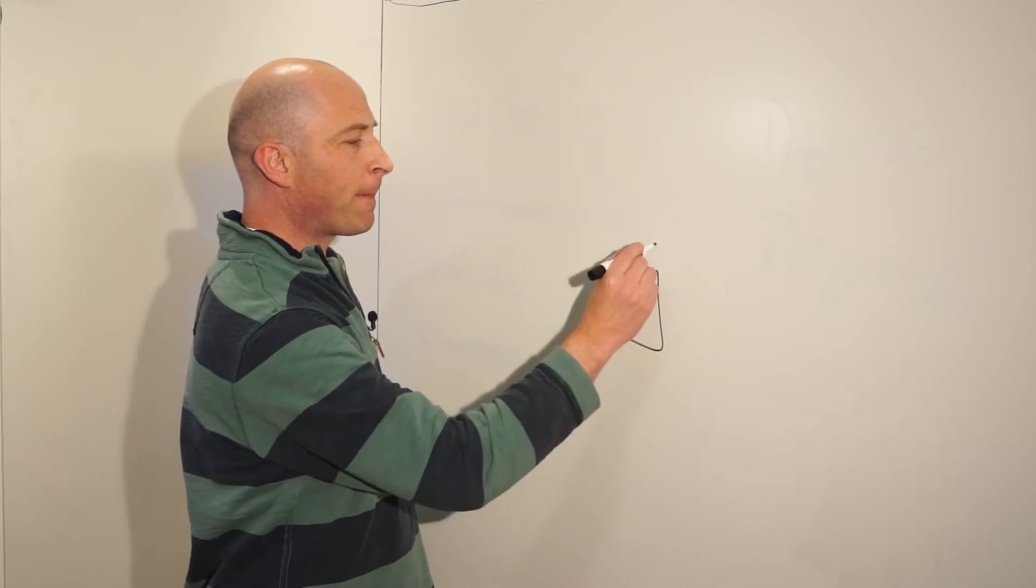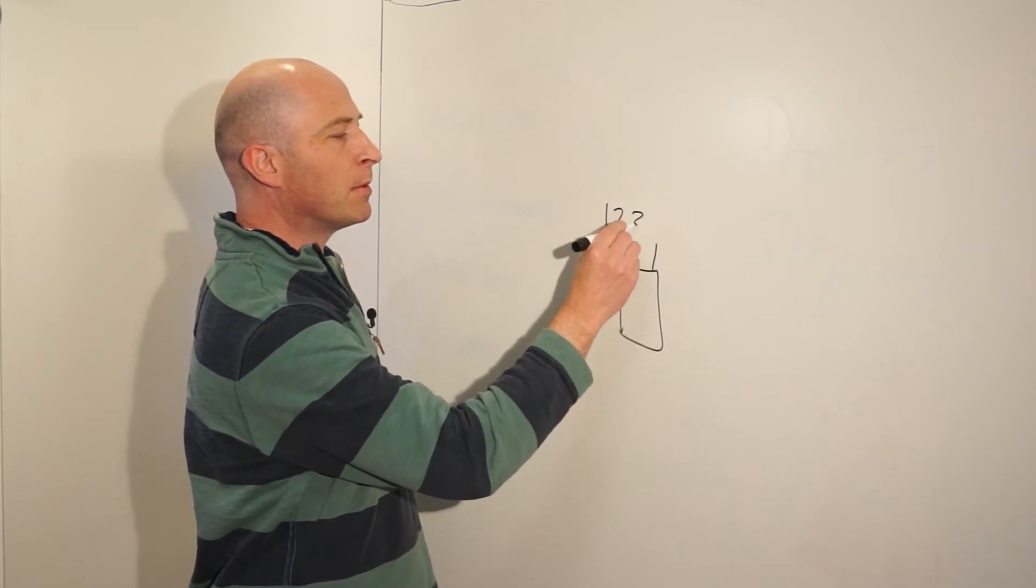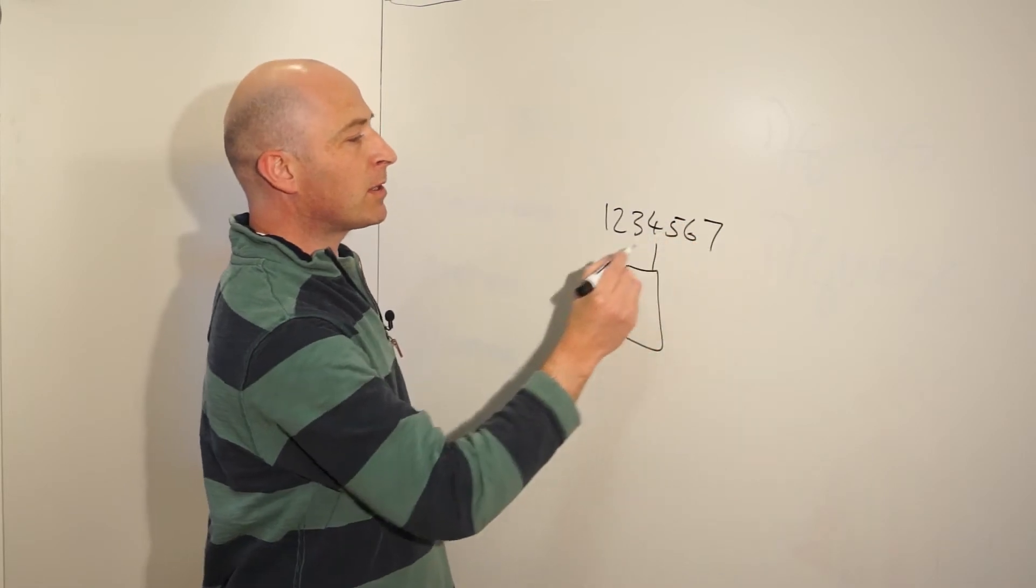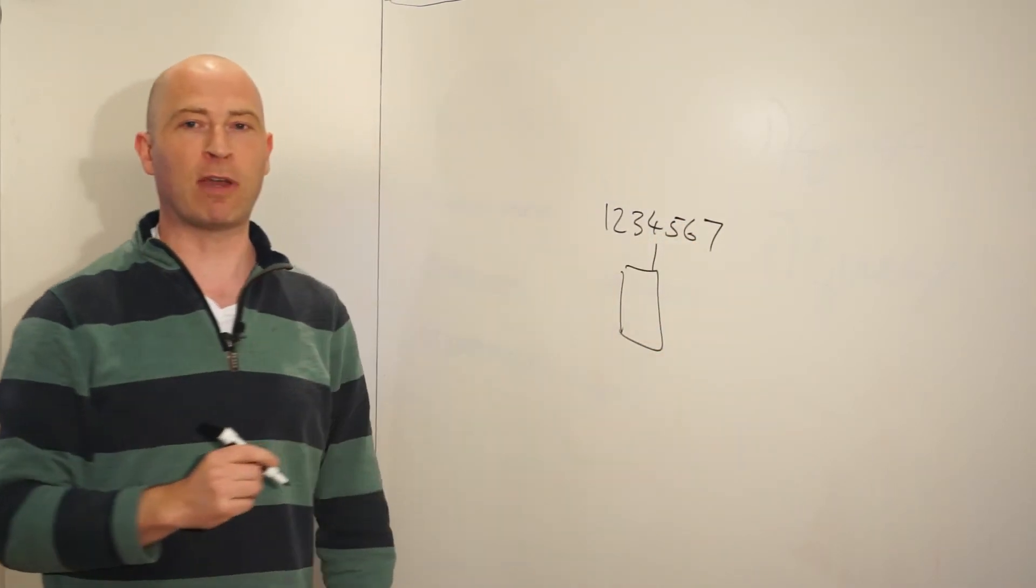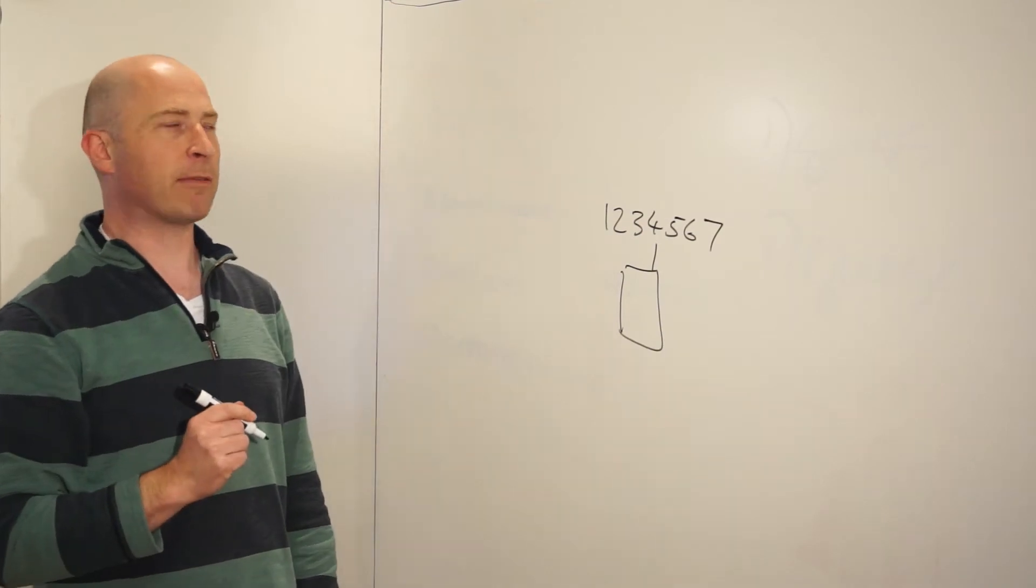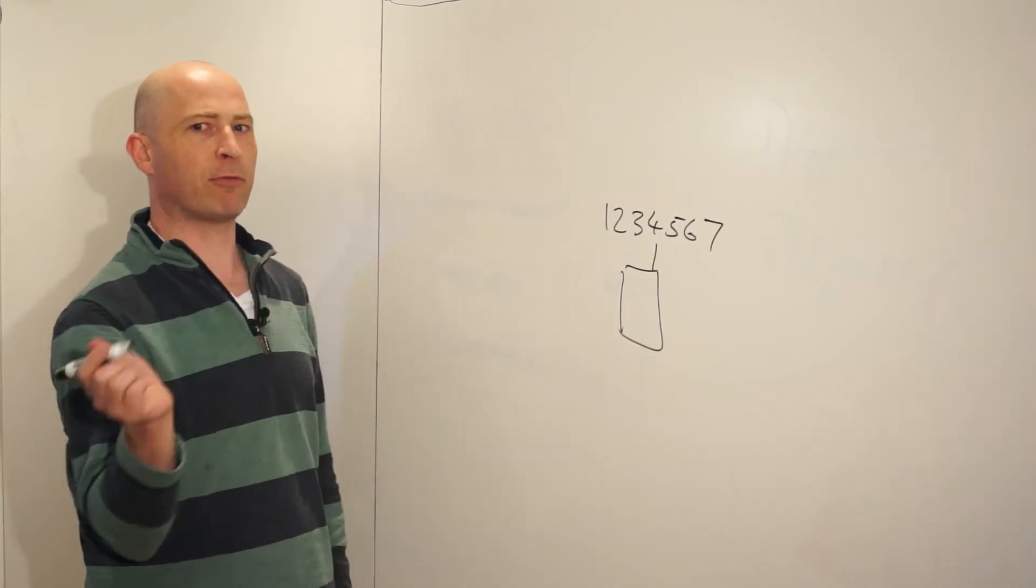So you've got a mobile phone, and you've got your mobile phone number, and hopefully only your friends and family know about your mobile phone number. So let's say your mobile phone number is 1234567. How do people know to send spam to 1234567? Why do they send it to you and not to your friend down the road?